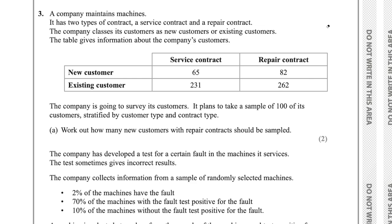Question 3 says the company maintains machines. It has two types of contract: a service contract and a repair contract. The company classes its customers as new or existing. The table gives information about the company's customers. The company plans to take a sample of 100 customers stratified by customer type and contract type. Part A says work out how many new customers with repair contracts should be sampled.